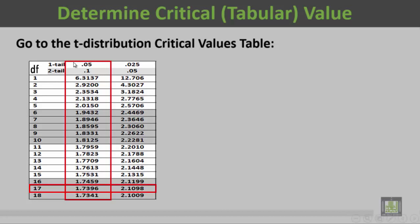We have in this case a one-tail test and alpha equals 0.05, so this is our column. The degree of freedom equals 17, so this is our row. The meeting of the column with the row will give us the tabular value, which is 1.7396.